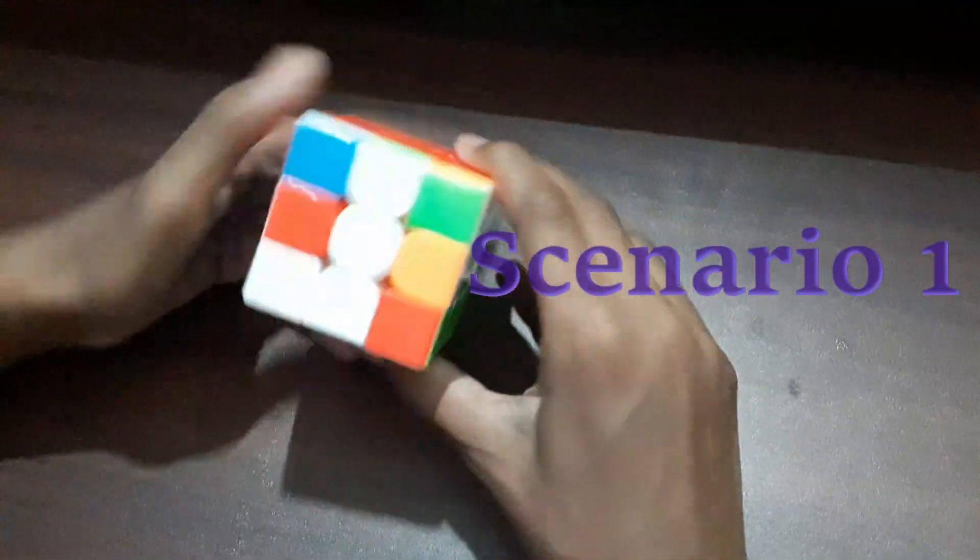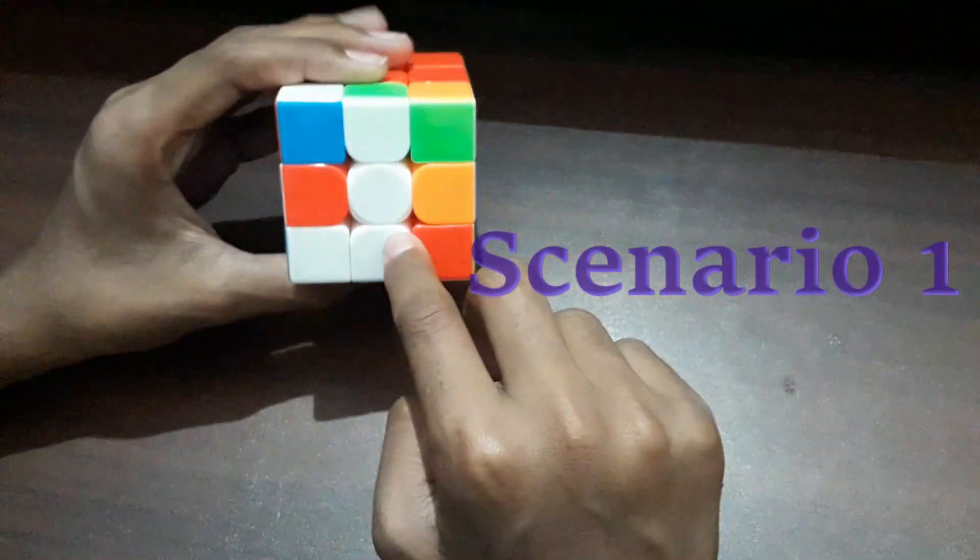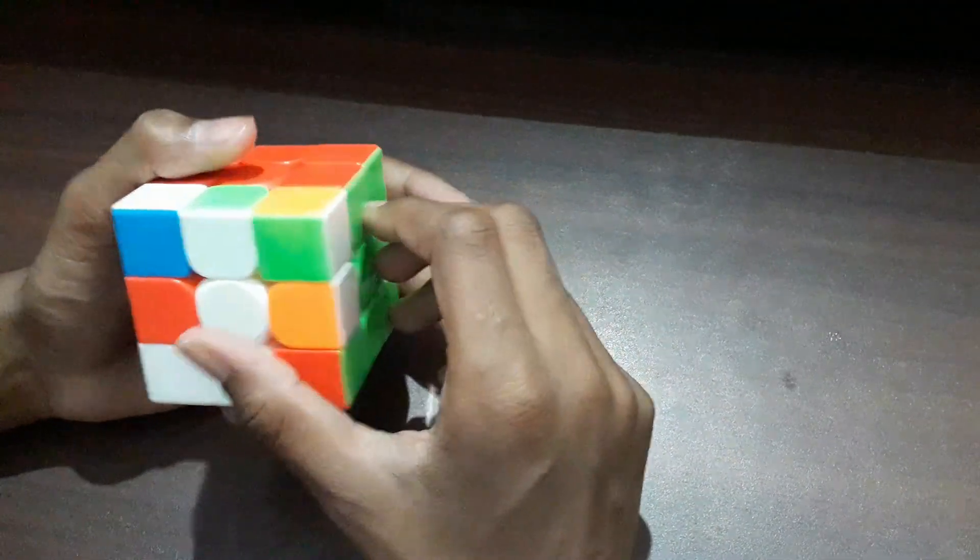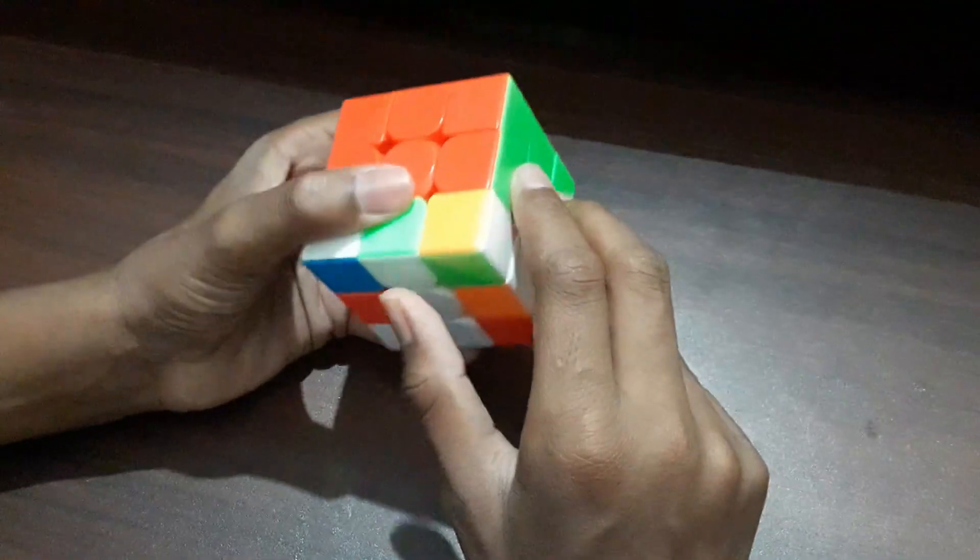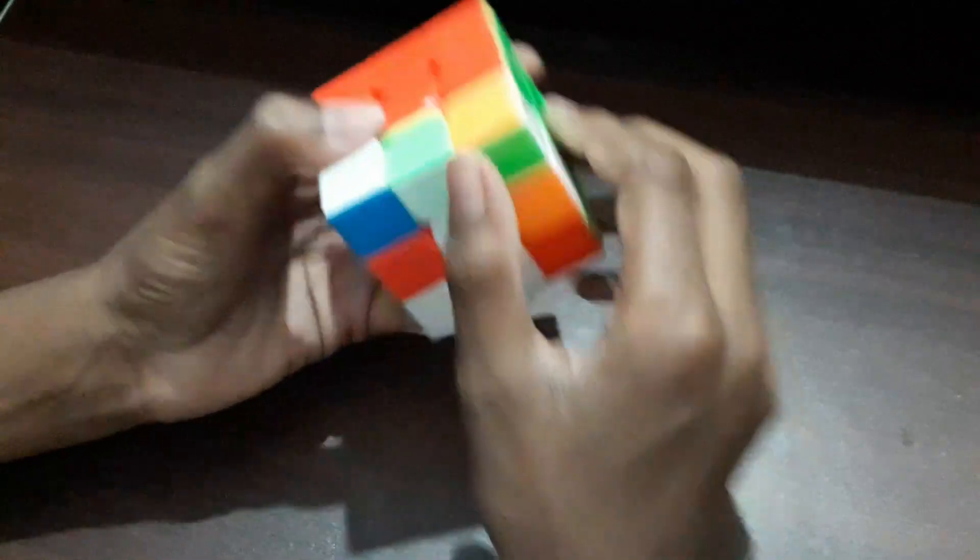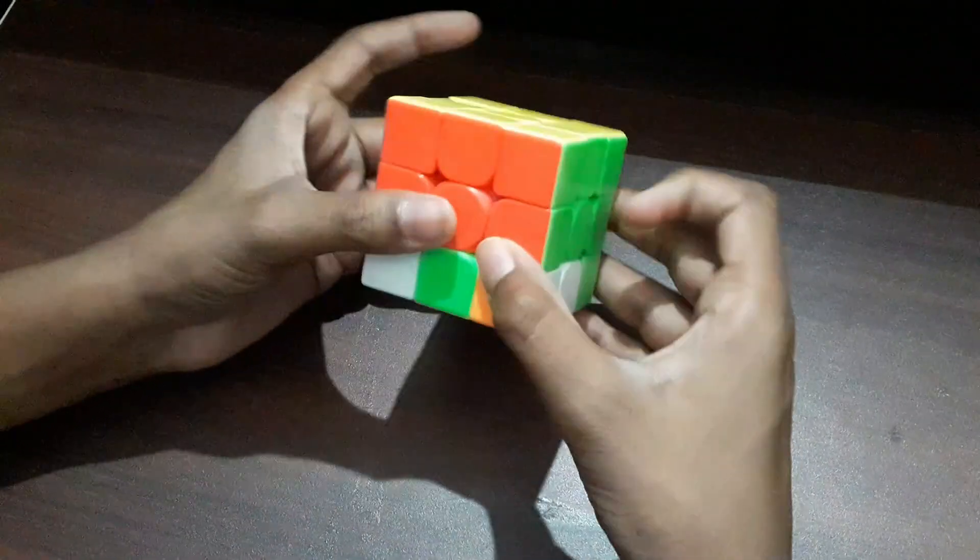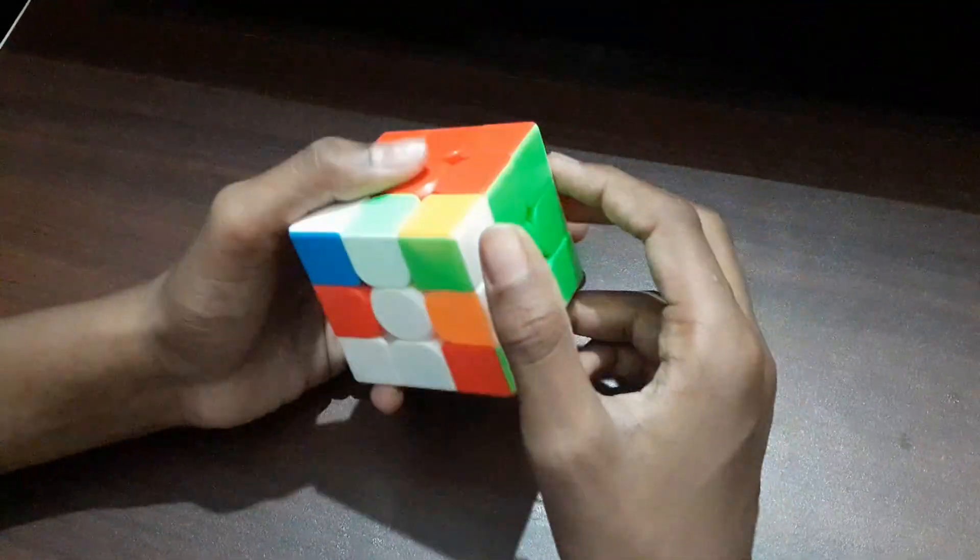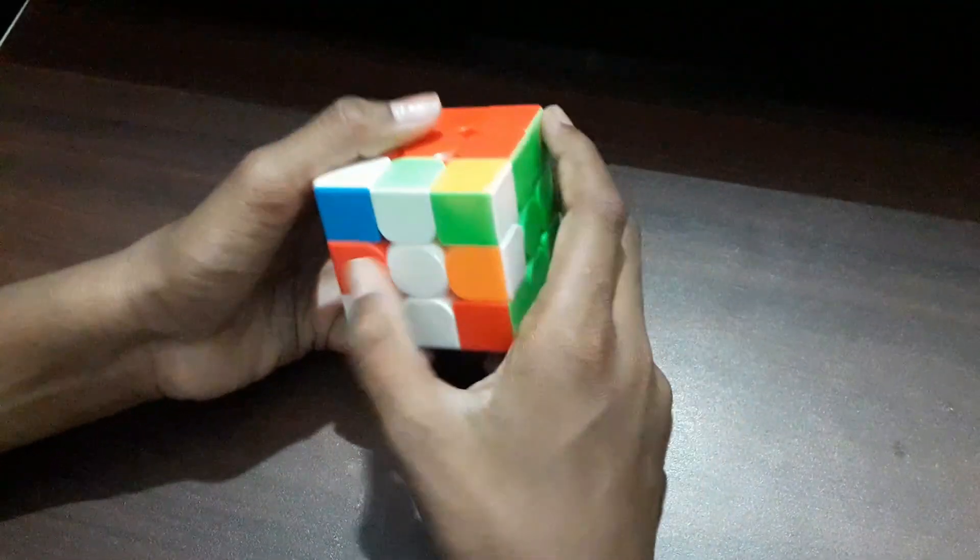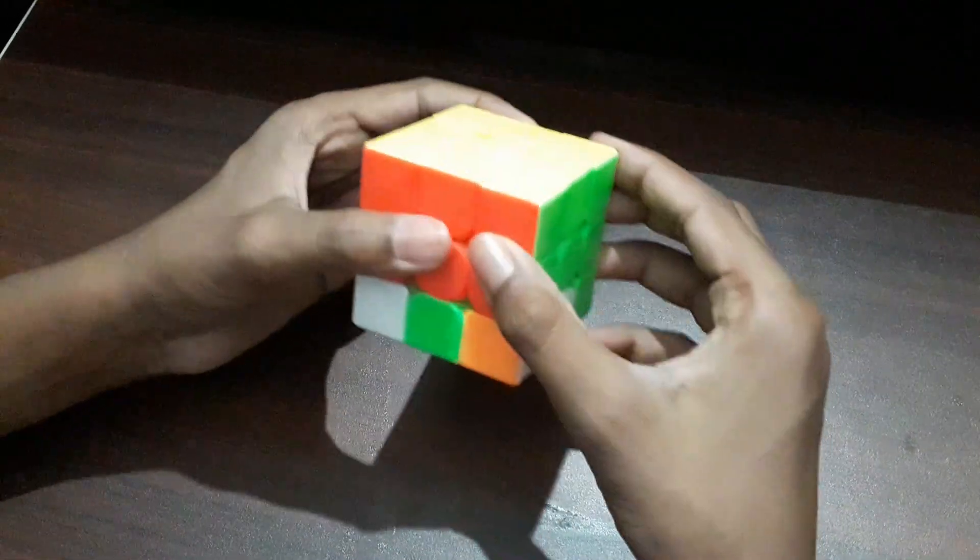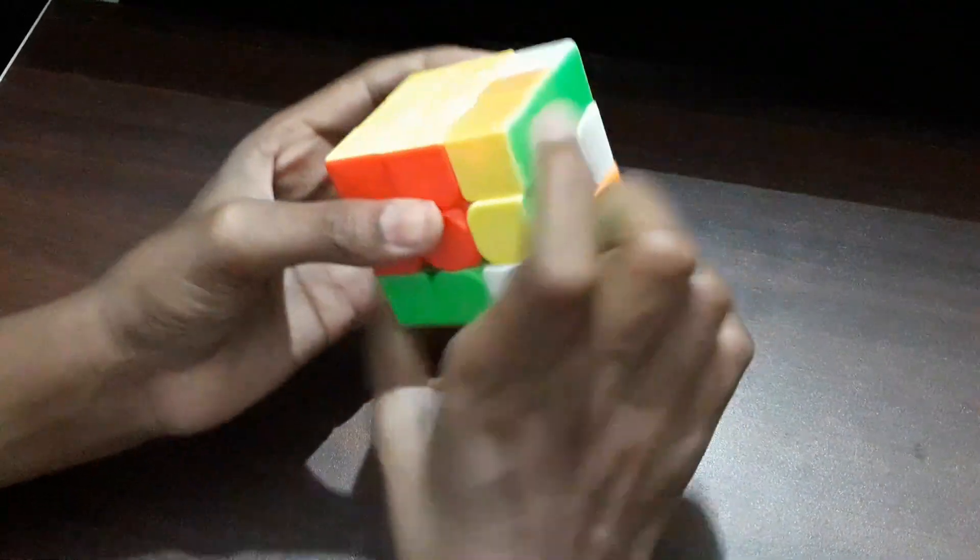The first scenario you will be seeing is the scenario of a straight line at the bottom of the cube. In order to solve such a scenario, we will be using the same J technique we used to form the cross. What we are going to do is keep this line vertical and use the same J technique we used earlier.